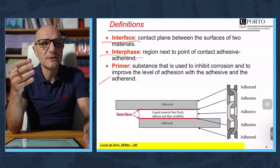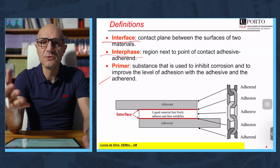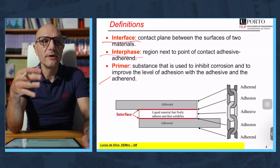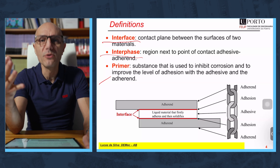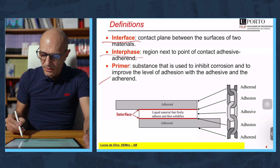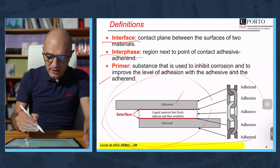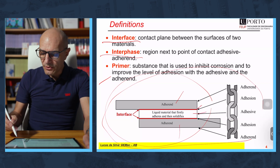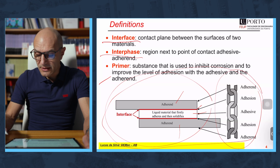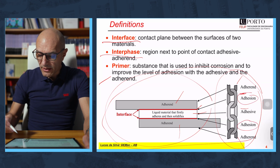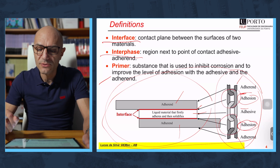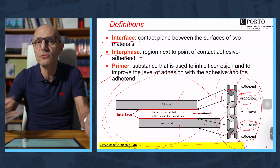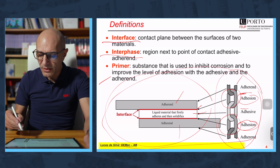Then we have primers. Primers can be used to protect the surface after surface treatment until you apply the adhesive, or they can be a product that enhances the adhesion between the adhesive and the substrate — an adhesion promoter. Globally, the whole joint includes the adherents, the adhesive, the interface, and the interphase. You can see this as a series of links. The interface links can never be the weakest link, otherwise we are in trouble and we won't be able to predict the joint strength. We need surface treatments to make sure it never fails there.